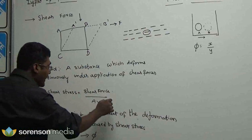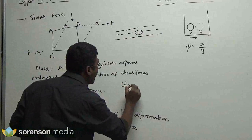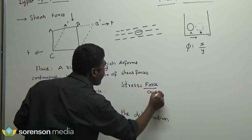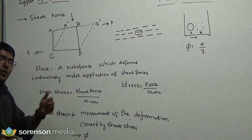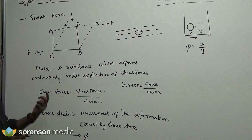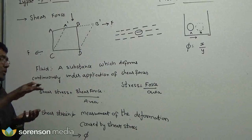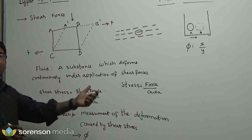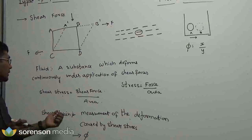Shear force divided by area is what you call shear stress, because stress is nothing but force by area. Whenever there is a stress, you also have strain. What is strain? This deformation you need to quantify — strain will measure the deformation. It is nothing but a measurement of the deformation which is caused by shear stress. That is what shear strain does.